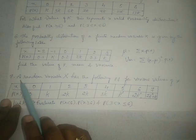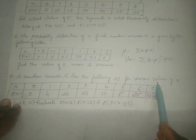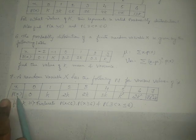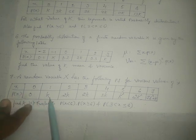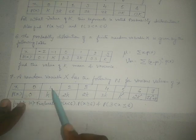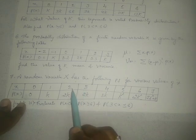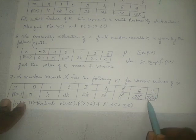The seventh problem: a random variable X has the following probability function for various values of X. For X equals 0, P(X) is 0; for X equals 1, P(X) is K; for X equals 2, P(X) is 2K — and so on up to X equals 7, where P(7) is 7K squared plus K.